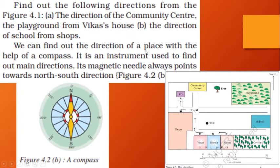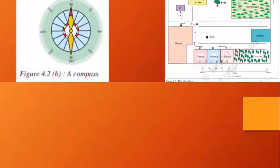We can find out the direction of a place with the help of a compass. A compass is an instrument used to find directions. The magnetic needle always points towards the north direction. Even on your mobile phone you have a compass — open it and you will see a needle always pointing north-south. From that, we can determine all other directions. It is very helpful for people to know where they are and which direction they are going.